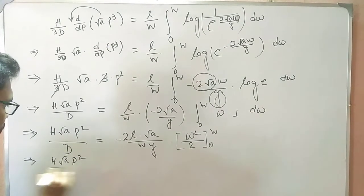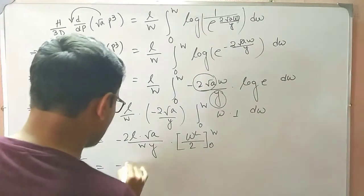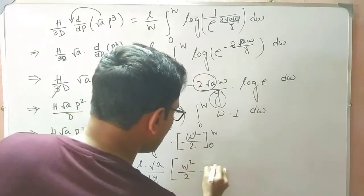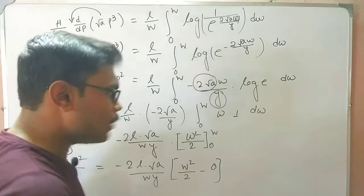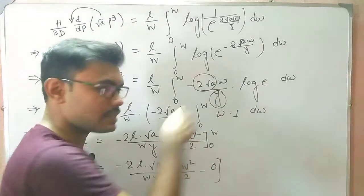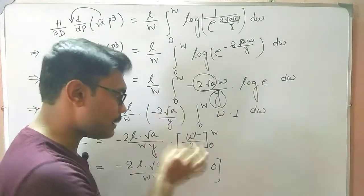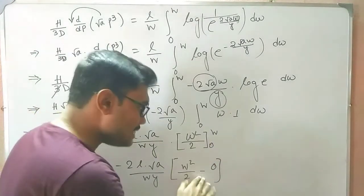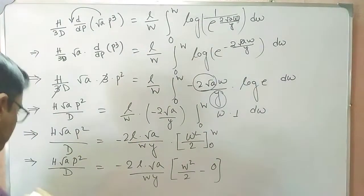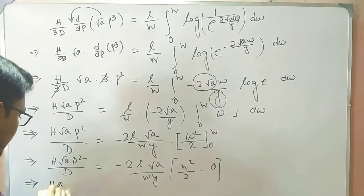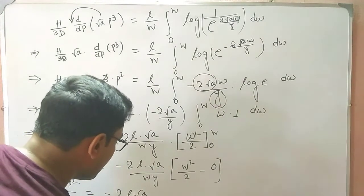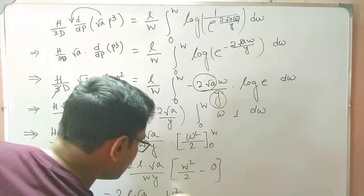H*√a*p²/D = -2L√a/(W*y) * W²/2 - 0. I am just putting the limit. How to put out this limit: first of all you have to put out the upper limit here where the variable is, you have to put out the value in the place of the variable, that means the variable is replacing by capital W minus you have to put out the lower limit, that means we are putting 0². This is giving us 0. And you are having from here H√a*p²/D = -2L√a/(W*y) * W²/2. Here 1/2 and another 2 is getting cancelled out, 1 W and another W getting cancelled out.